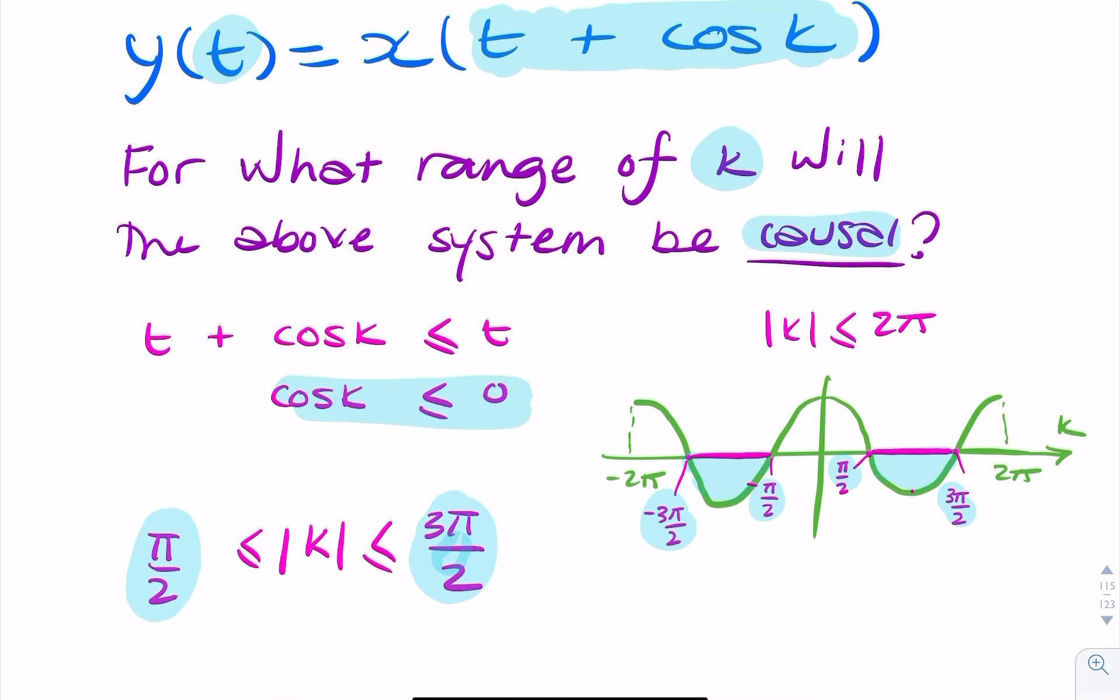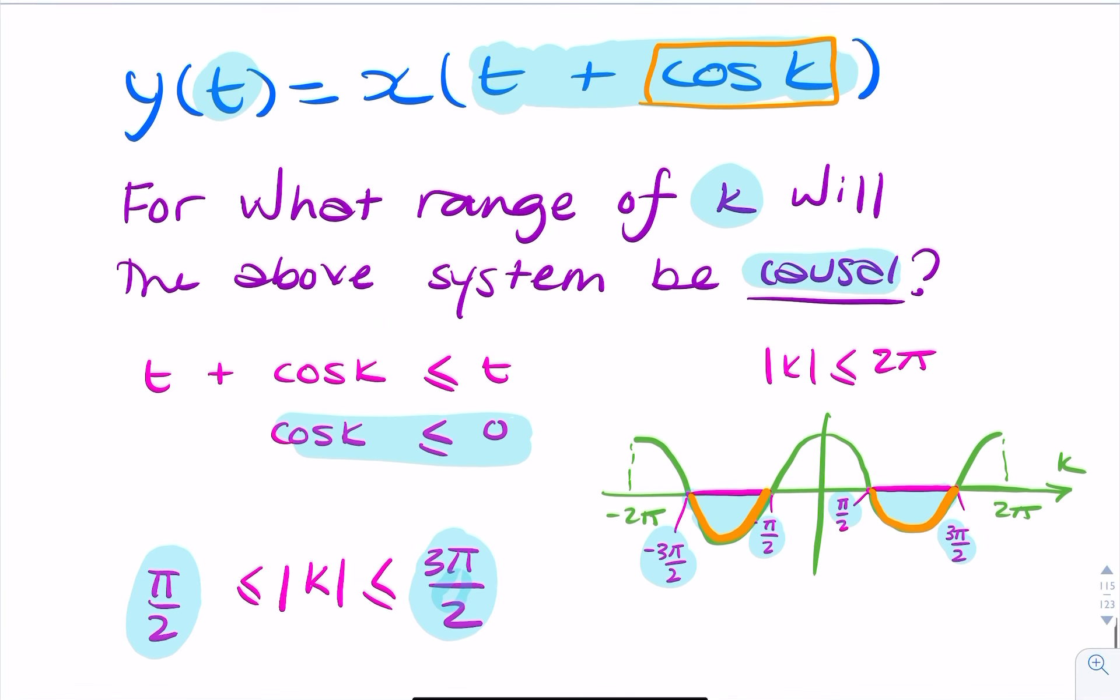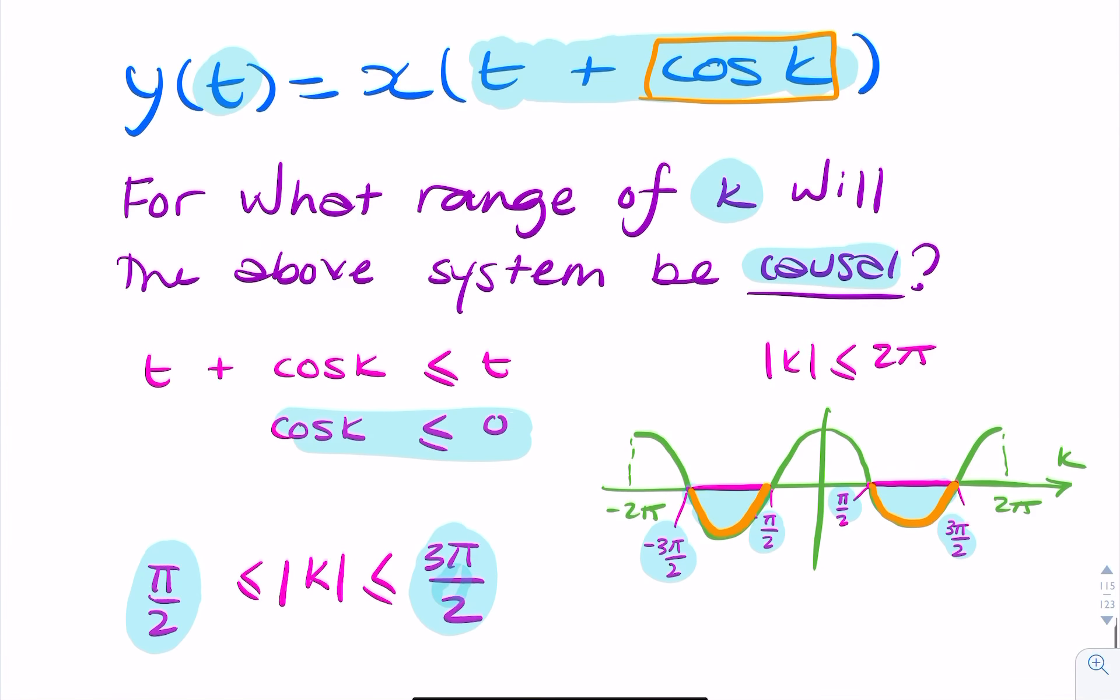So let me just illustrate. I'm talking about this part of the curve where the cosine is negative. Why do I need the cosine to be negative? Because only by this being negative will I be sure that I am never looking into the future. This cannot be greater than that. So that's my condition.